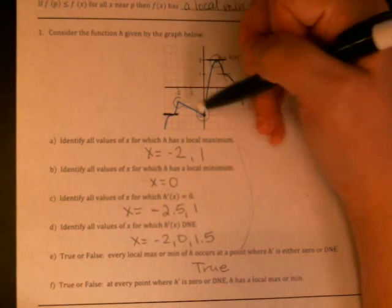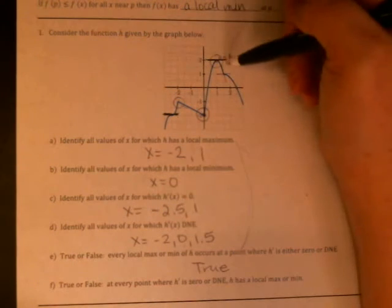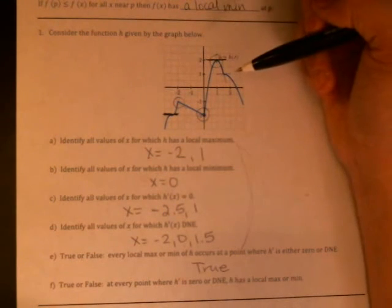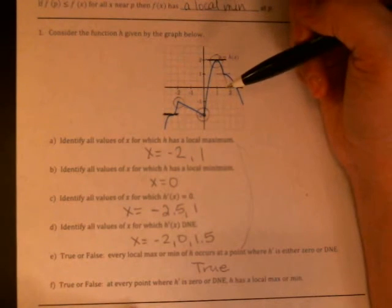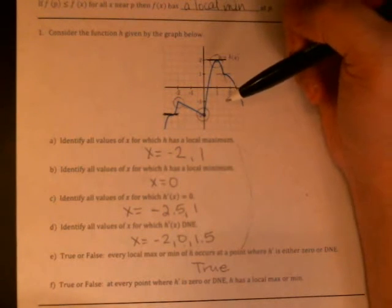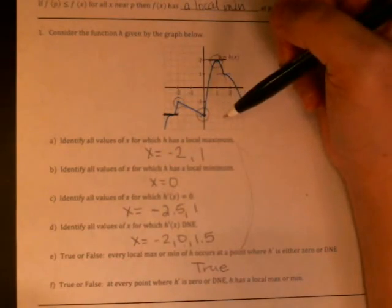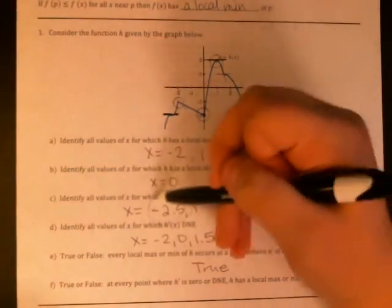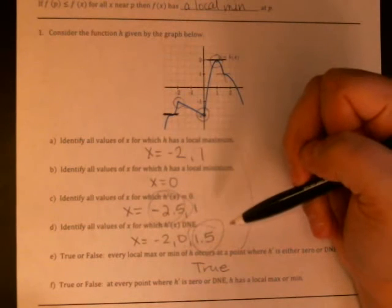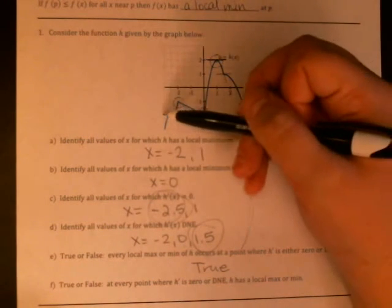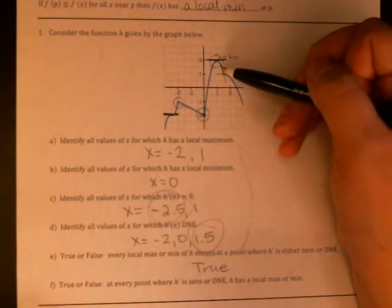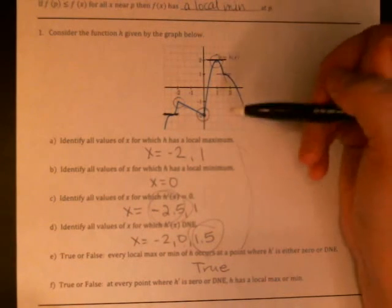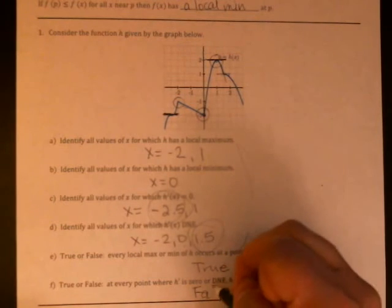True or false: at every point where the derivative is zero or undefined there is a local max or min. So that's false. Let's see, negative 2.5 is a good example, 1.5 is a good example. At negative 2.5 the derivative is zero but there's no max or min, and at 1.5 the derivative does not exist but there's no max or min. So that appears to be false.